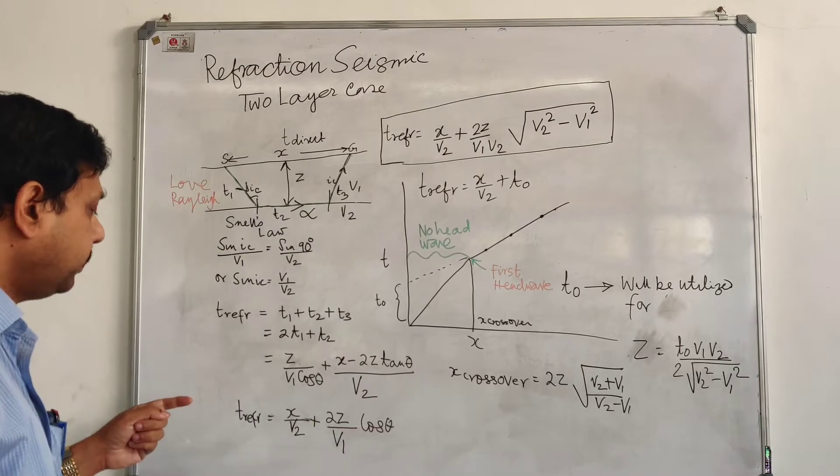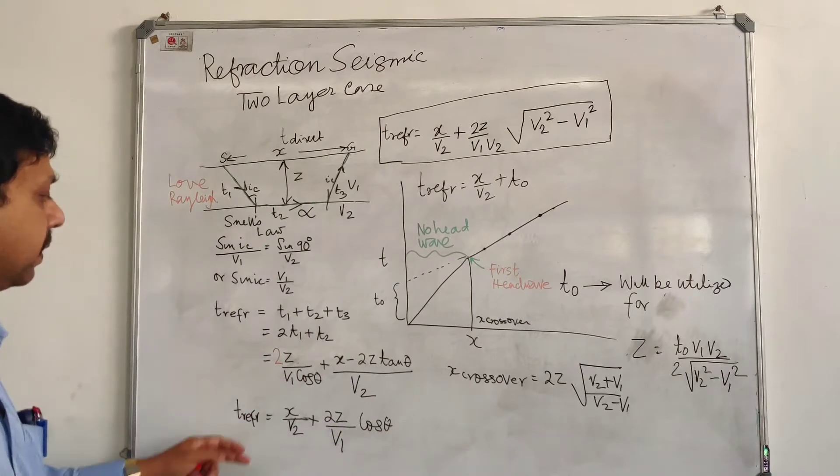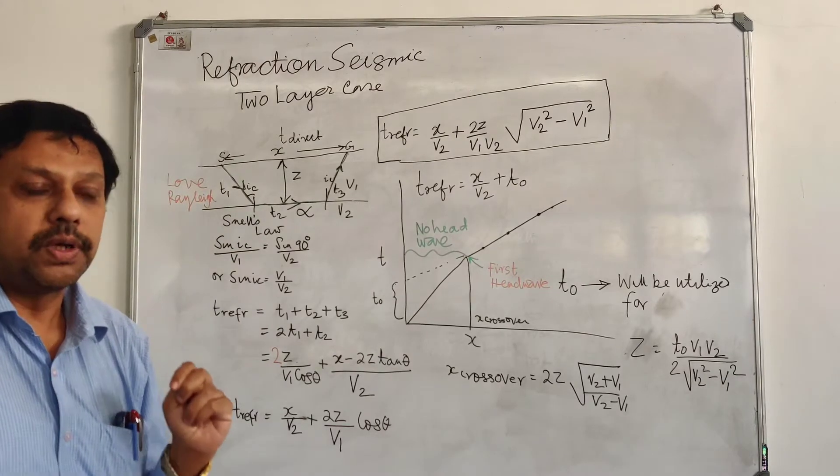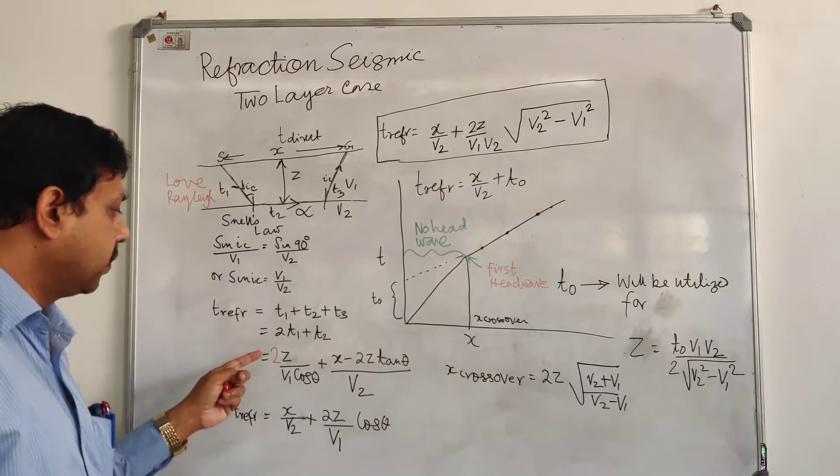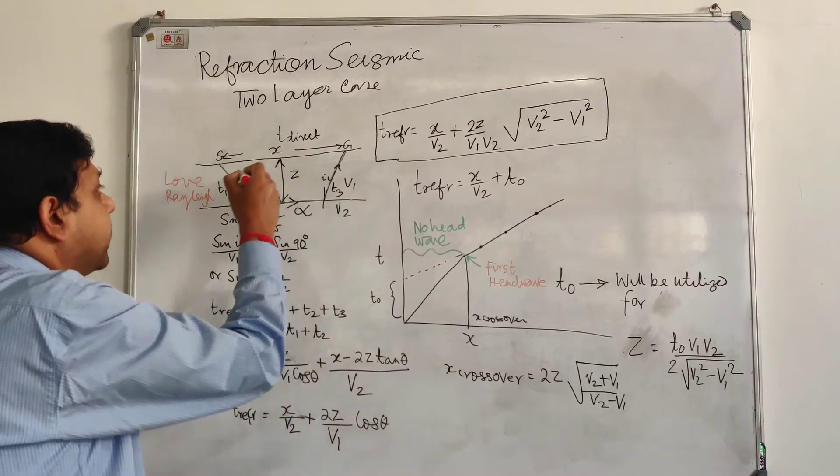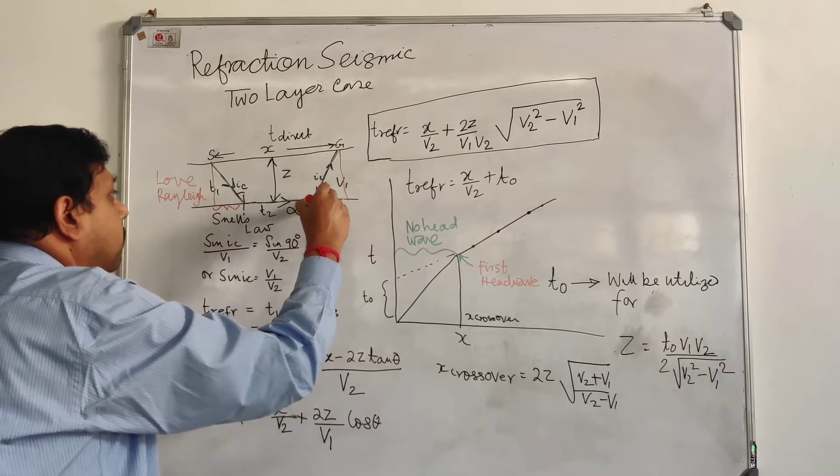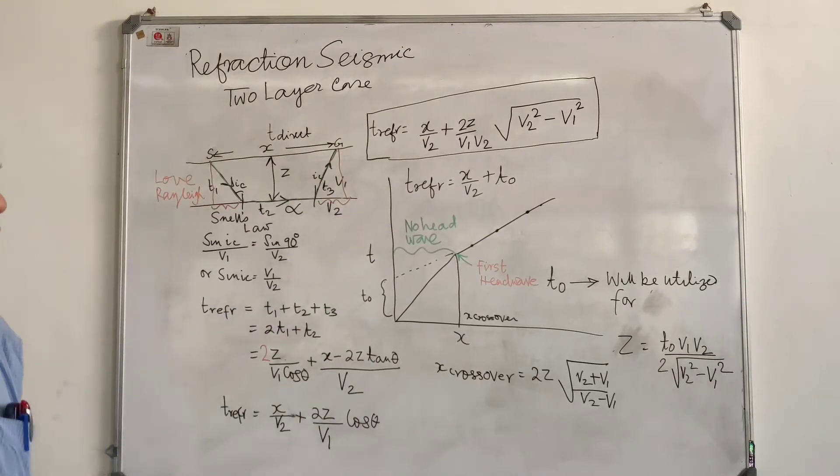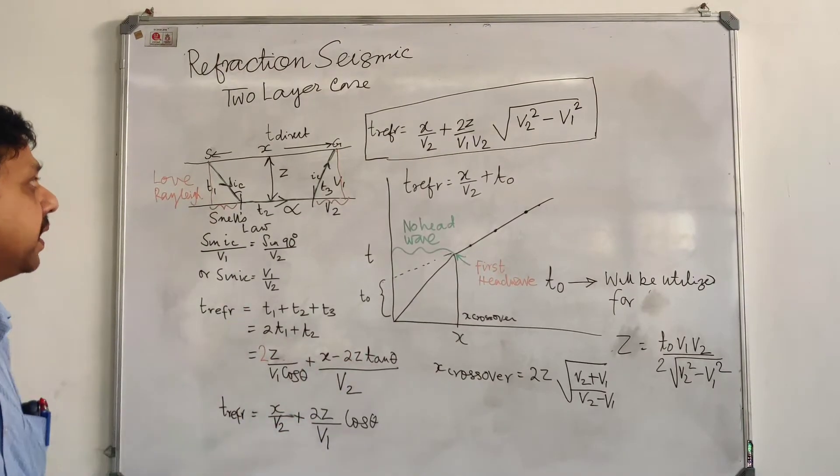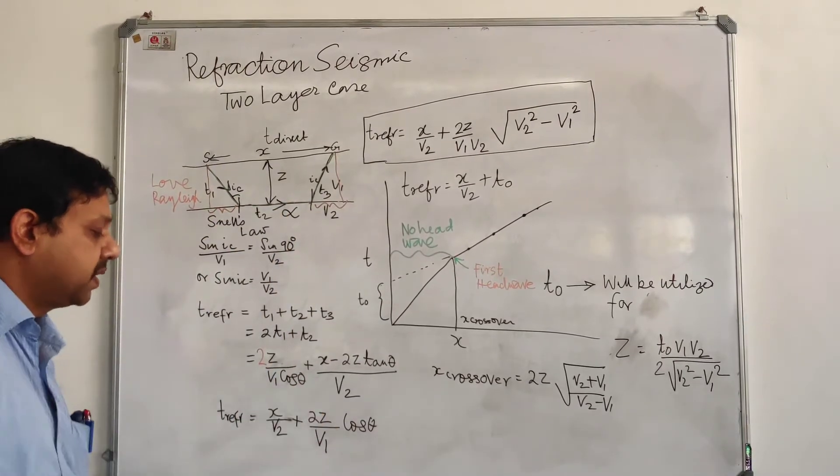Let Z be the thickness of the first layer. So if we put it, we will have 2Z by V1 cos theta. That means Z by V1 cos theta is T1, and since we told it is 2T1, it will be 2Z by V1 cos theta plus X, which is the whole offset, minus this part and this part which are equal. So those are Z tan theta, so we subtract X minus 2Z tan theta, which is this part only and has been traveled by velocity V2.